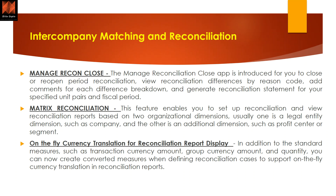Next is intercompany matching and reconciliation, generally called ICMR. This functionality was specifically released in full in 1909, and with the 2020 release the high-level changes include 'Manage Reconciliation Close.' This new app allows you to close or reopen a period reconciliation, view differences by reason code, and add a comment for each breakdown. This is very important when an accounting team is doing reconciliation and the finance manager or controller wants to see why there is a difference, or when contacting a partner entity within intercompany business.